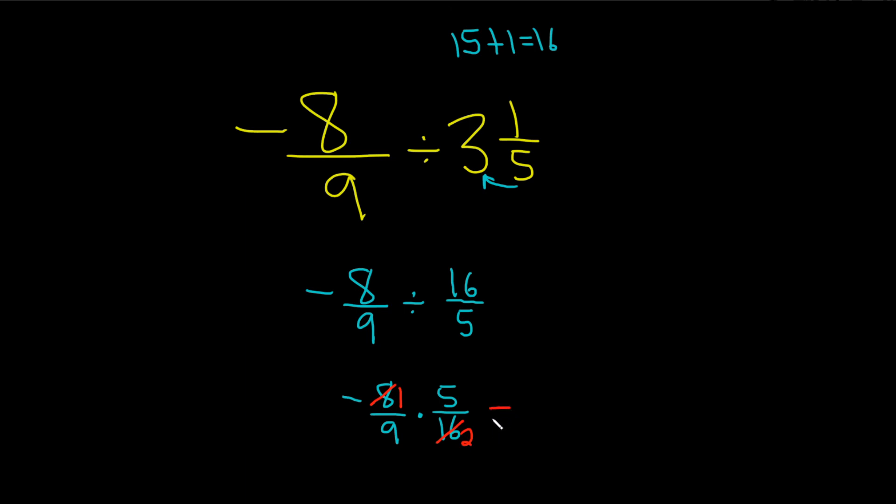Let's put an equal sign here. And now we multiply straight across. 1 times 5 is equal to 5. And then 9 times 2 is equal to 18. Then you just keep a negative sign. It just hangs out. And that would be the final answer. I hope this video has been helpful.